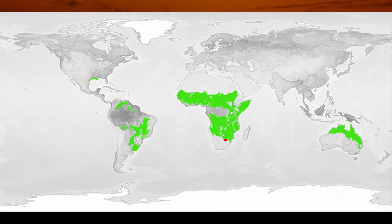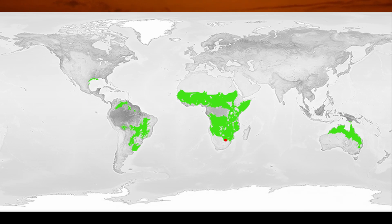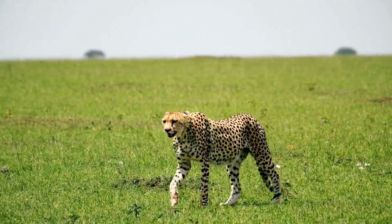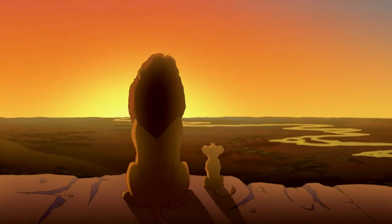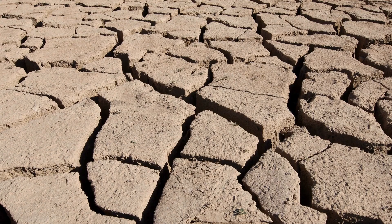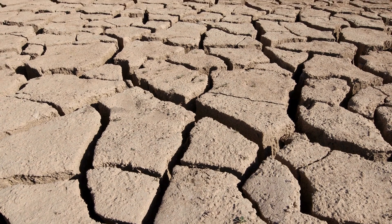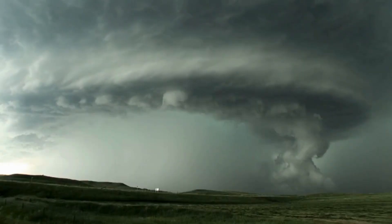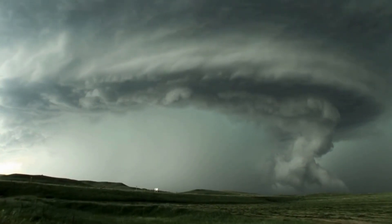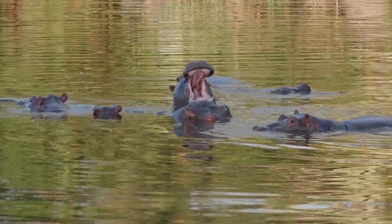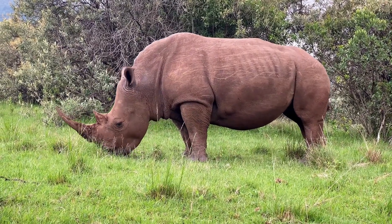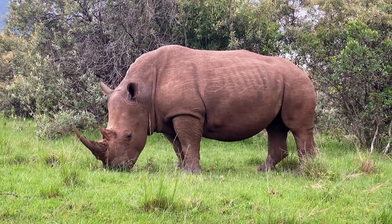Savannas, also known as shrublands, chaparral, or tropical grasslands, are a more familiar sight — think about the Lion King. Savannas experience seasons as well; however, their seasons are the dry season and the wet season. These areas receive more precipitation than the temperate grasslands, ranging from 200 to 1,000 millimeters. Since they get more rainfall, they tend to have more shrubs and trees than the temperate grasslands.